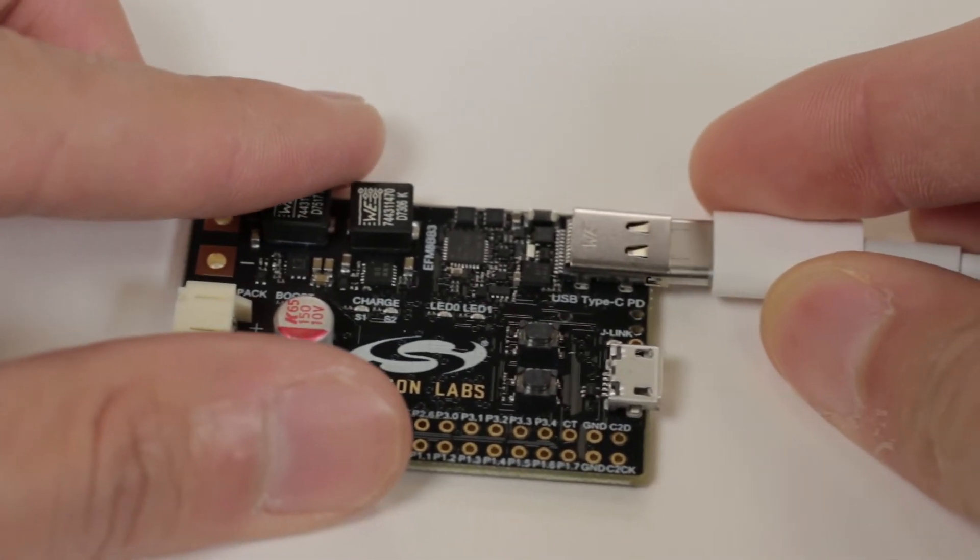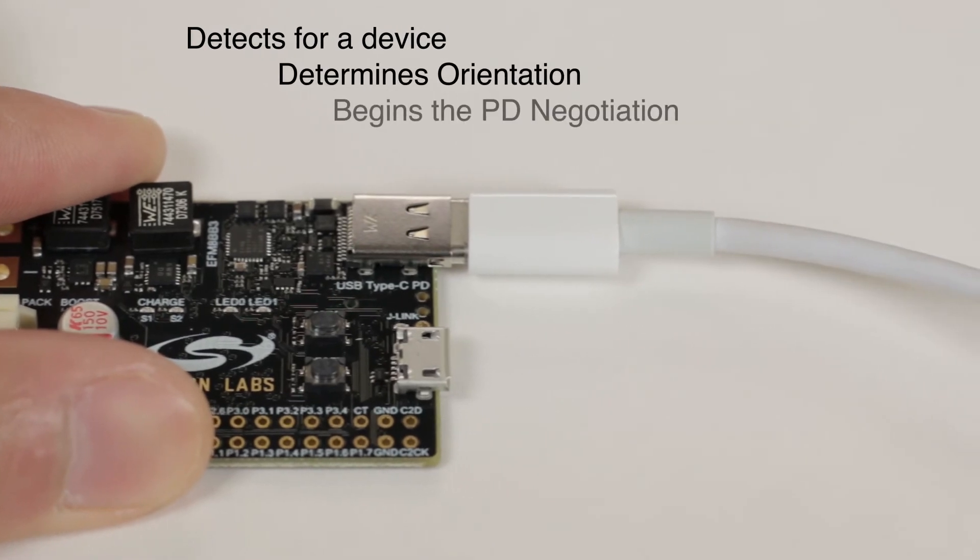The PD controller detects a device, determines the orientation, and begins the PD negotiation.